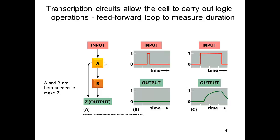The third type of circuit is a feed-forward loop: protein A is made, protein A makes protein B, and together protein A and protein B make protein Z. It's important to emphasize that you only make Z if both A and B are present. So why would you complicate things this way? A feed-forward loop is in a sense a safety mechanism to ensure that you only make Z when you really intend to.